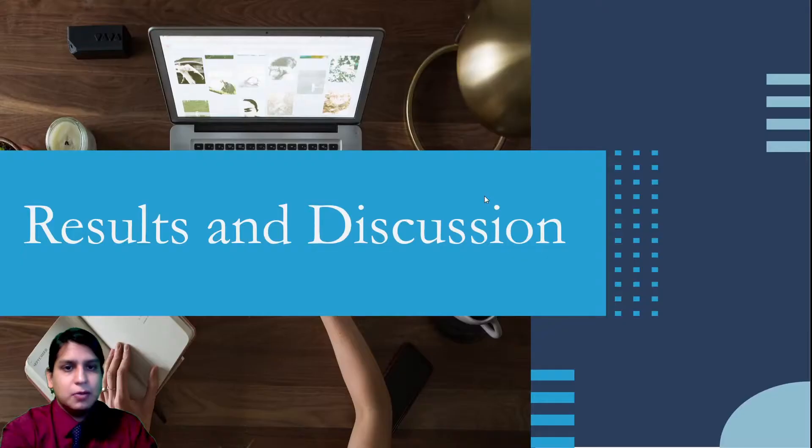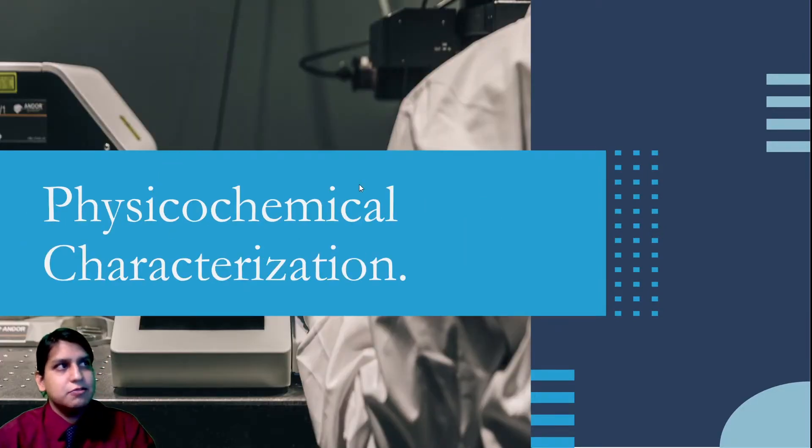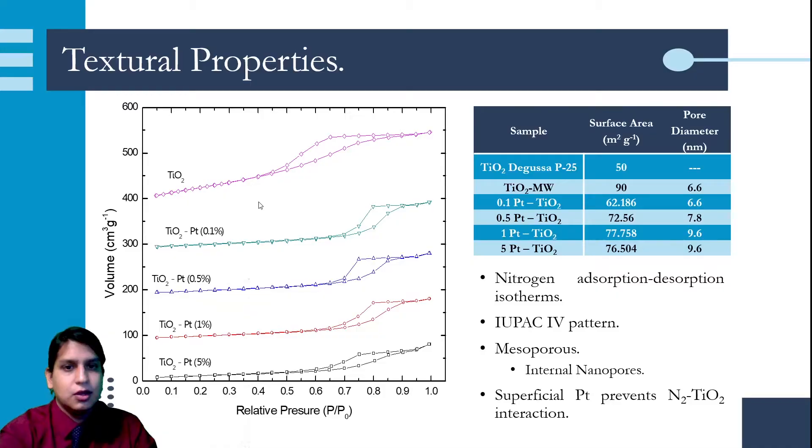Now I'm going to talk about the results and discussion, starting with physicochemical characterization. In the textural properties, we analyzed the nitrogen adsorption-desorption isotherms of the materials. They correspond to a Type IV pattern that indicates it is a mesoporous material with internal nanopores.